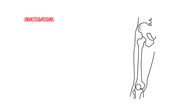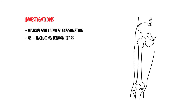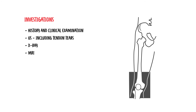Regarding investigations: the diagnosis is really based on history and clinical examination. However, investigations that could be ordered include an ultrasound of the region, which could reveal tendon tears, as well as X-ray and MRI if the diagnosis is uncertain.